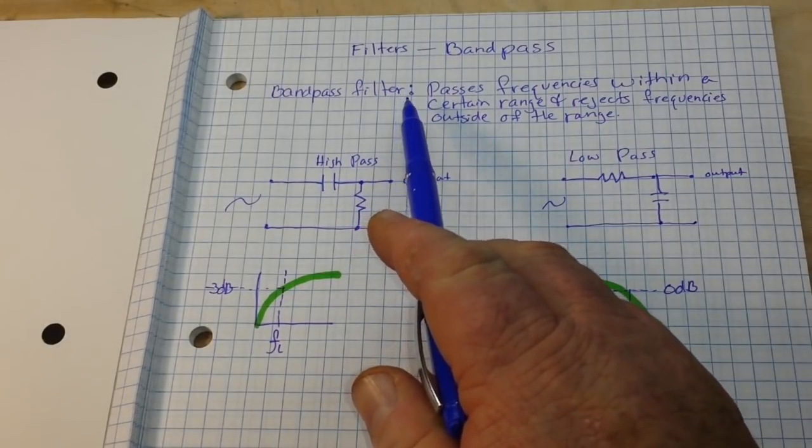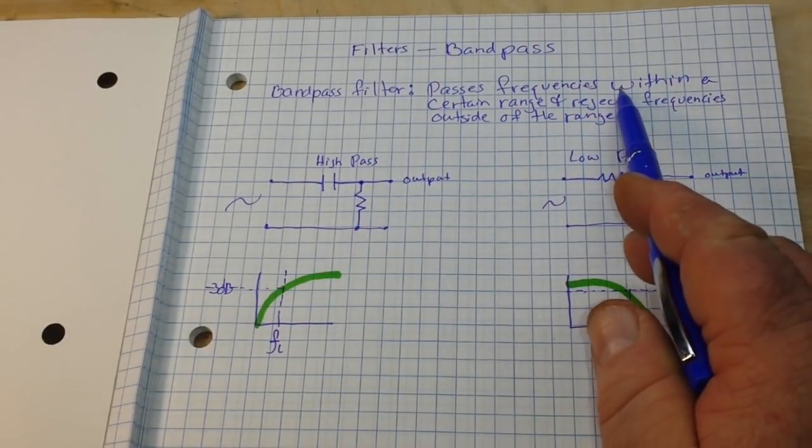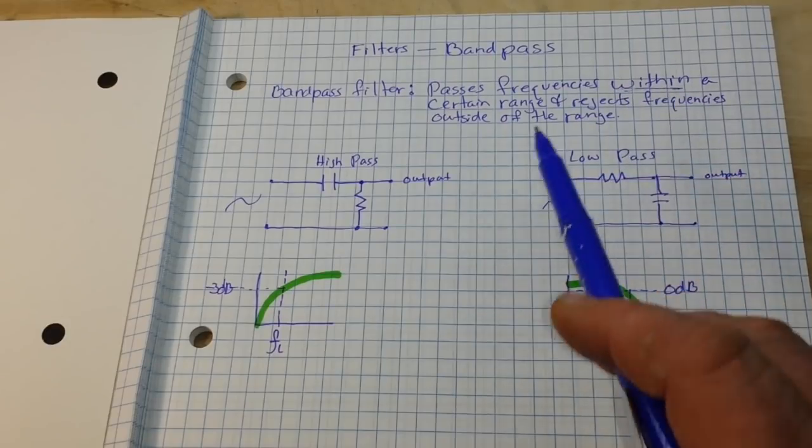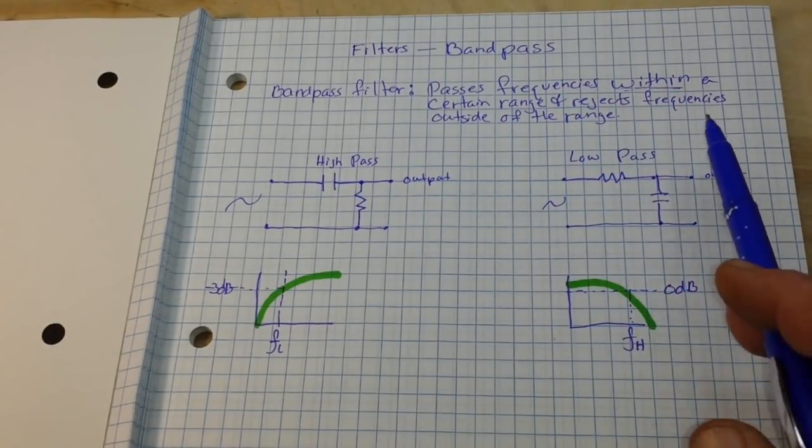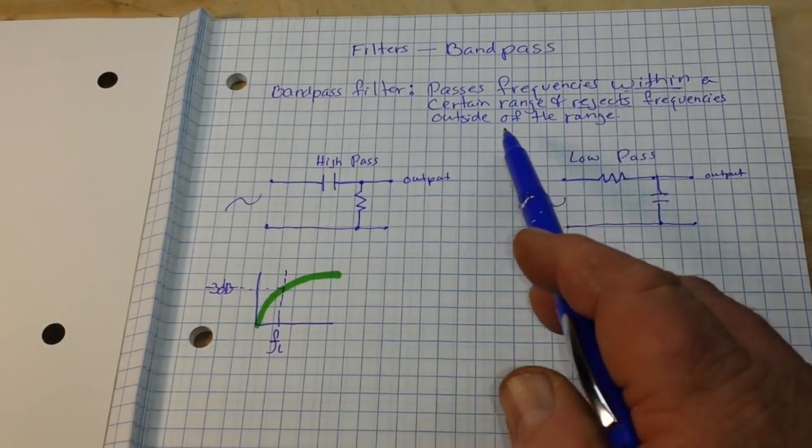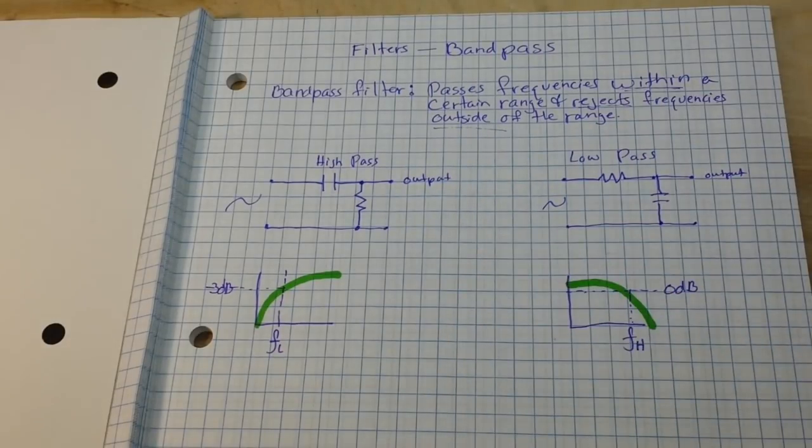A bandpass filter very simply passes frequencies within a certain frequency range and rejects frequencies that are outside of that range. That's about as simple as it gets.